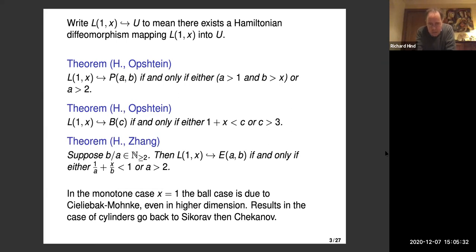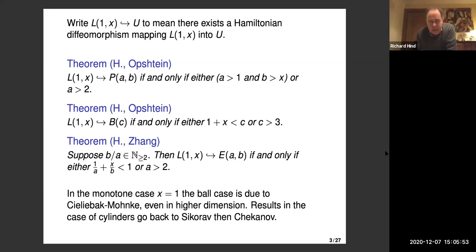But if the smallest factor on the ellipsoid is less than two, the best you can do for embedding a product Lagrangian via a Hamiltonian flow or global symplectomorphism is just the inclusion map. We don't know that in all cases — to prove it we need to assume the ratio of the factors on the ellipsoid is an integer.